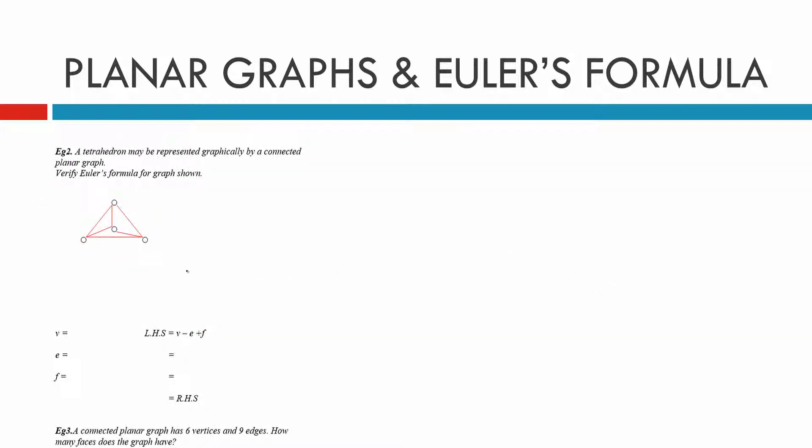Example 2 says a tetrahedron may be represented graphically by a connected planar graph. Verify Euler's formula for the graph shown. So again, how many vertices are there? There are 4 edges. We won't put any dashes on them. We'll just count them. There's 1, 2, 3, 4, 5, 6 edges. And faces, if you count them, there's 1, 2, 3, 4 faces.